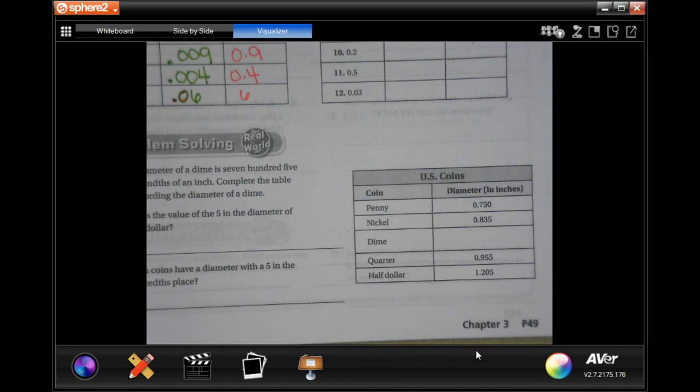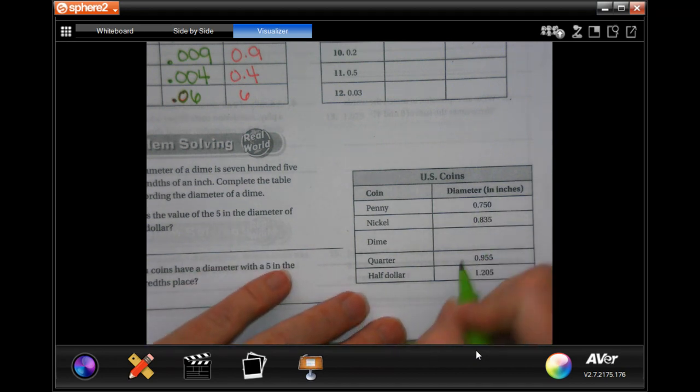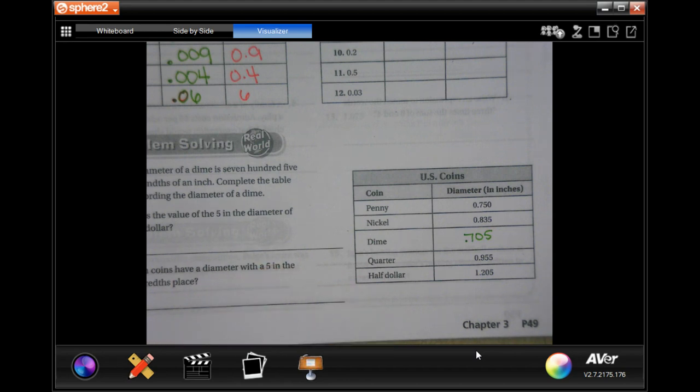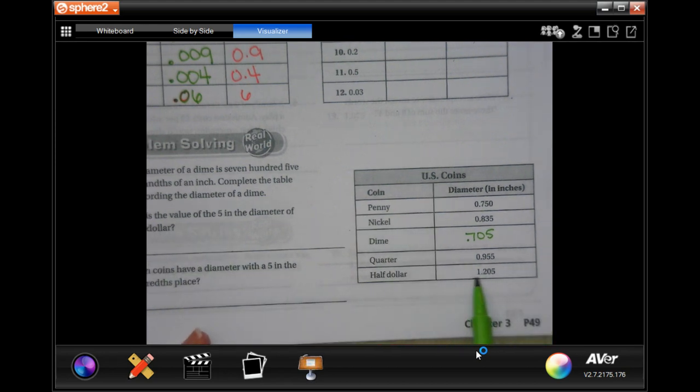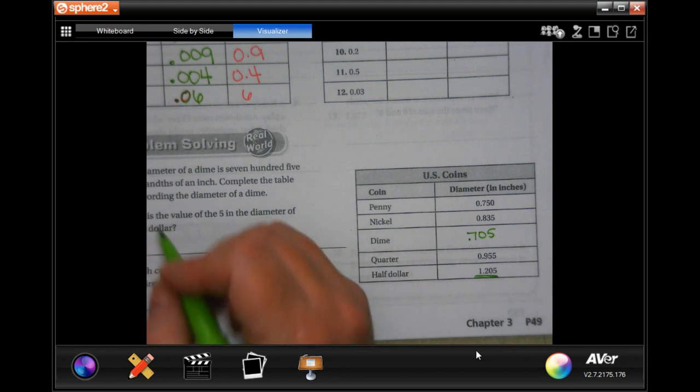All right, the diameter of a dime is seven hundred five thousandths of an inch. Complete the table by recording the diameter of a dime. So 705, and if we put the decimal right there then the five is in the thousandth place. What is the value of the five in the diameter of a half dollar? Well here's our half dollar and that five is in the thousandth place, so it's going to be five thousandths.